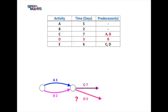The next task is activity D. We have a problem because according to the table, activity D starts after activity B — there's no mention of A. In our diagram at the moment we've drawn D coming off the same node as activity C, so according to our diagram activity D is waiting on both A and B, but according to the table activity D can start after just two days when B is completed. So we may need to reconsider our project network diagram.